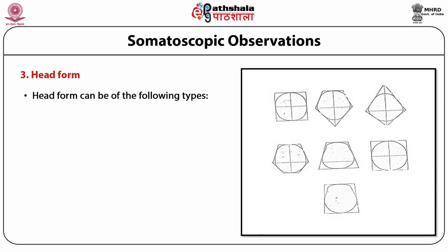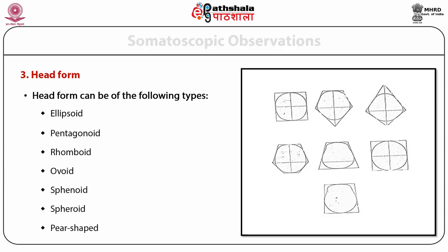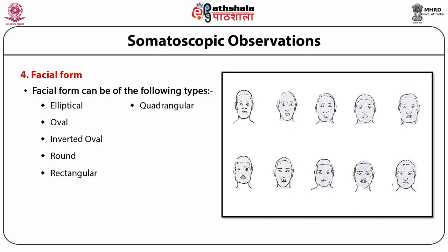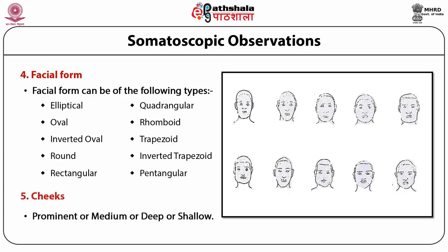Head form can be of the following types: ellipsoid, pentagonoid, rhomboid, ovoid, sphenoid, or pear-shaped. Facial form can be: elliptical, oval, inverted oval, round, rectangular, quadrangular, rhomboid, trapezoid, inverted trapezoid, or pentagonal. Cheeks may be prominent, medium, deep, or shallow.